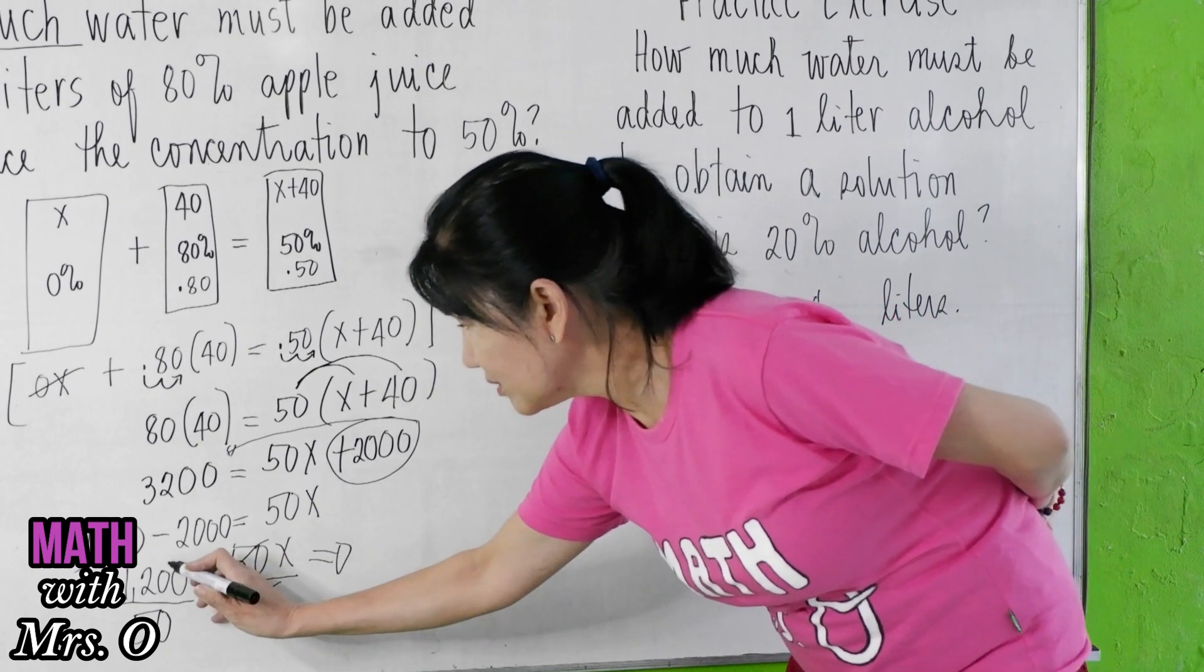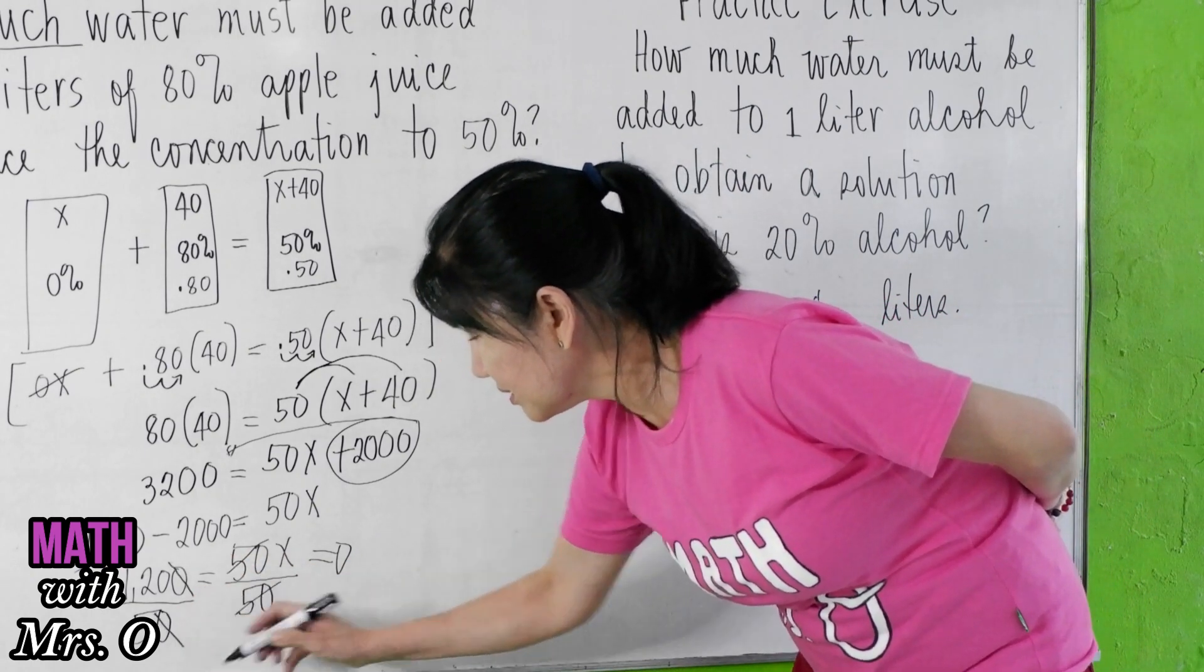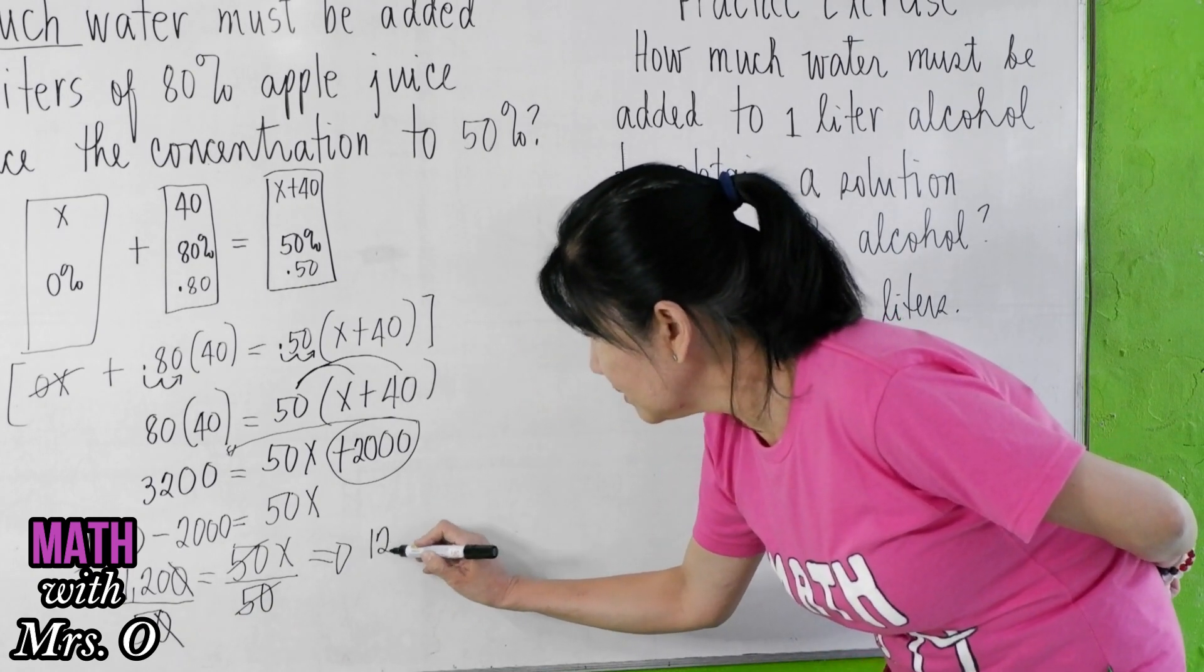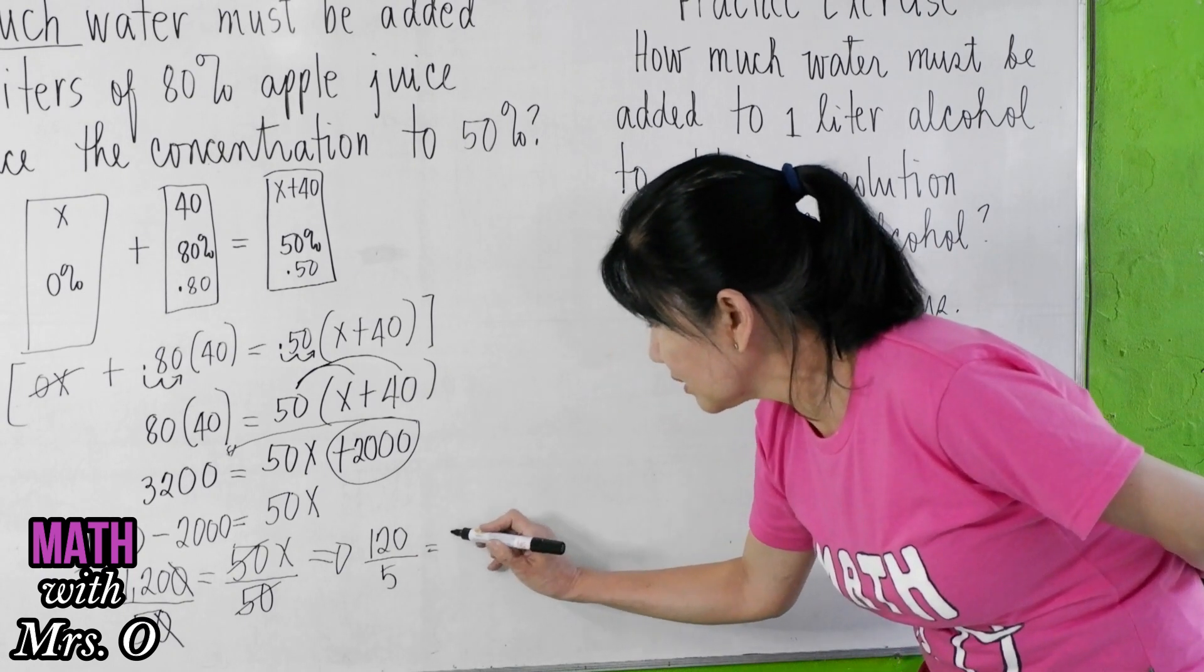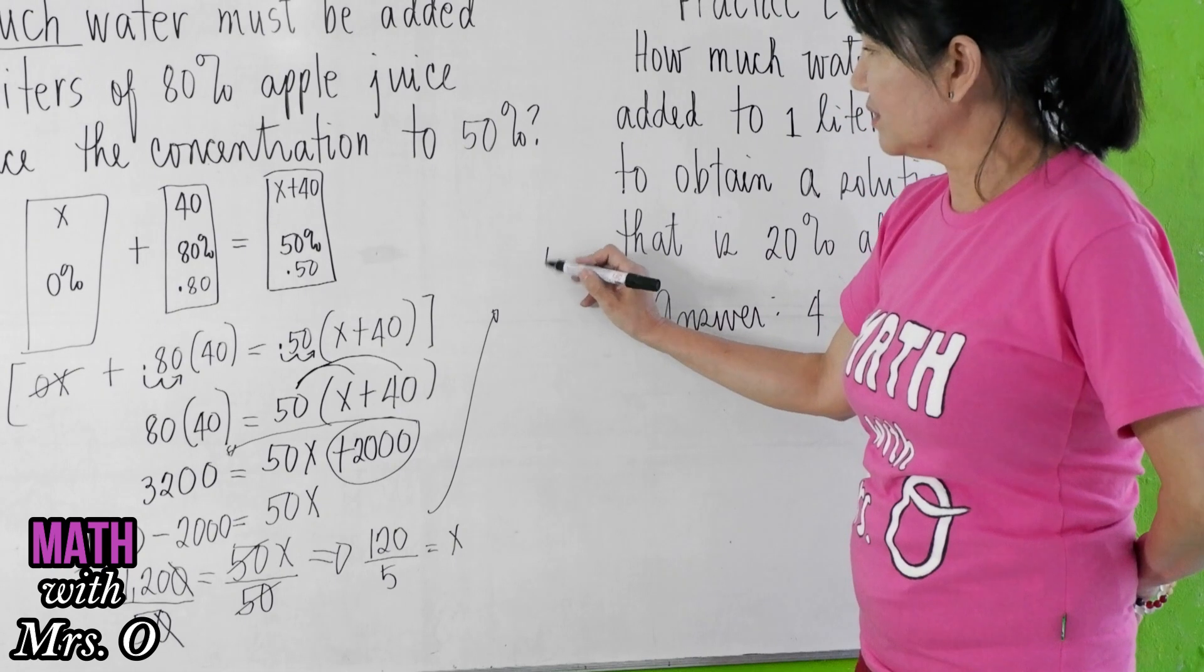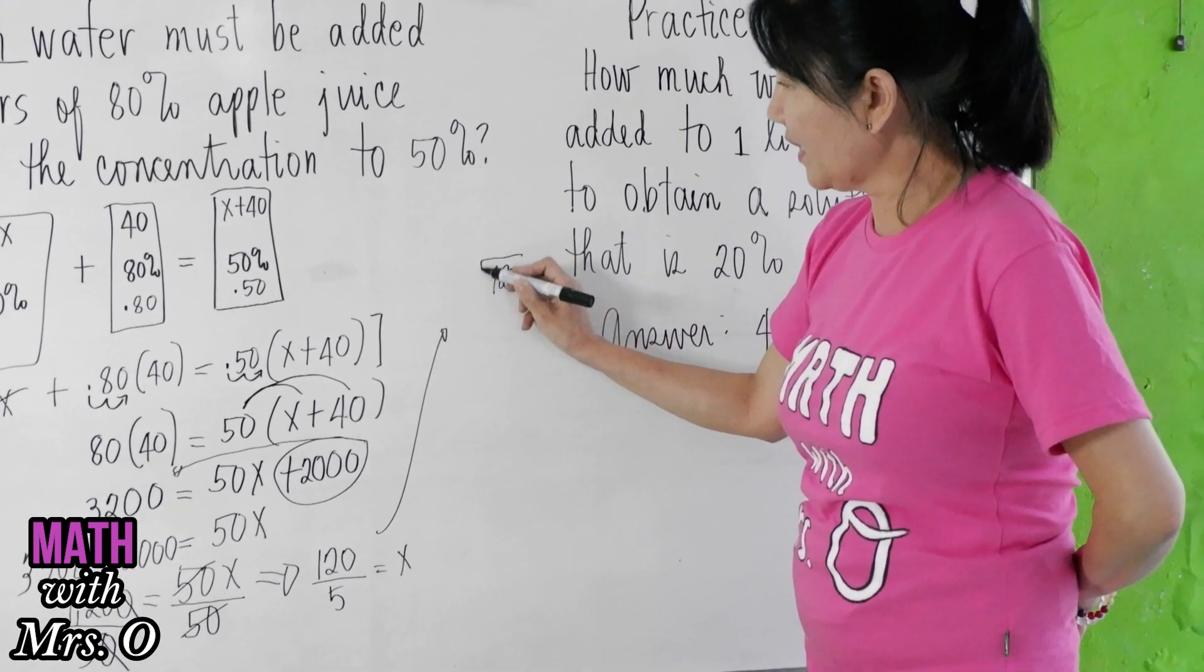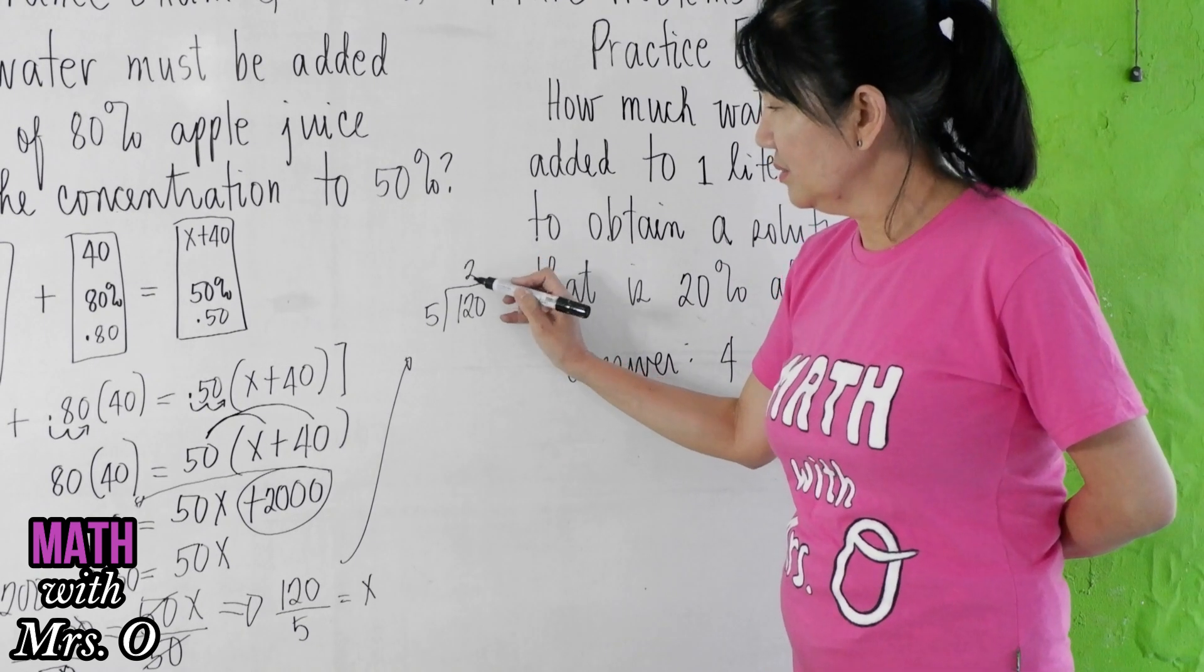We can now cancel 50 over 50 here, and then you can also cancel the zero, one zero up and one zero down. You're left with 120 over 5 is equal to x.